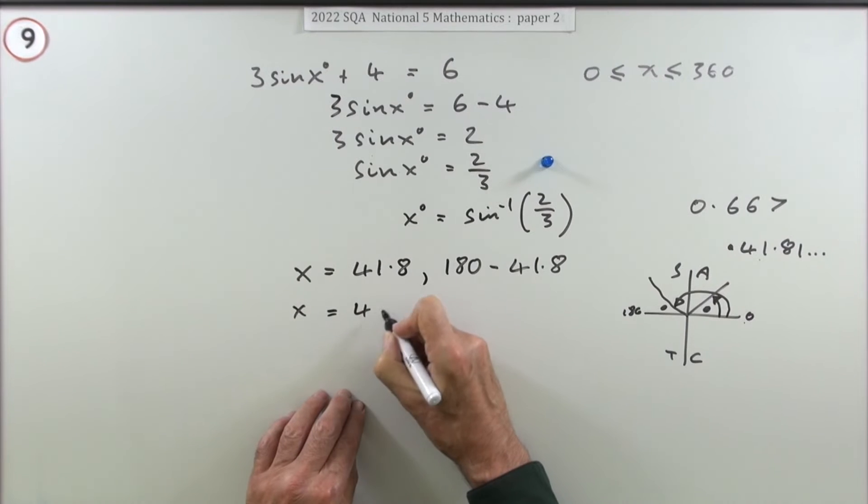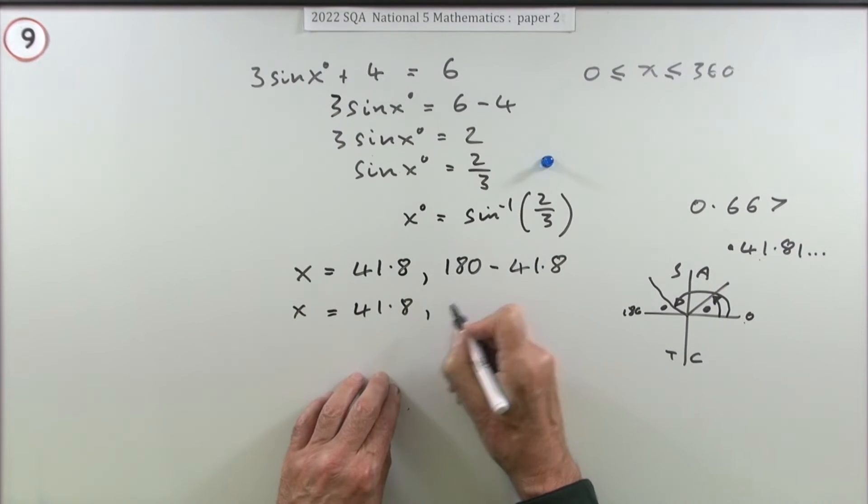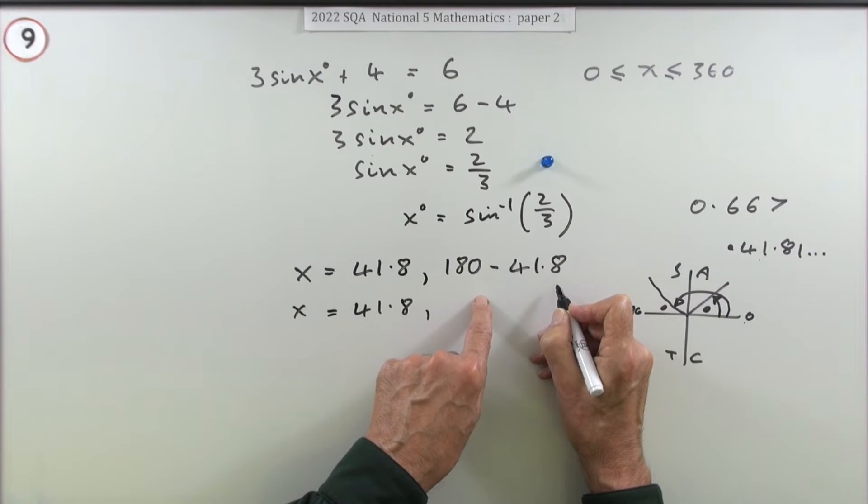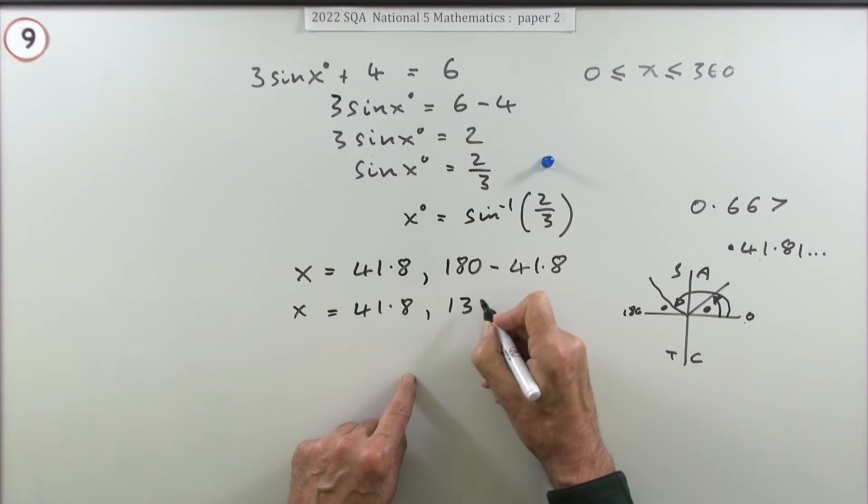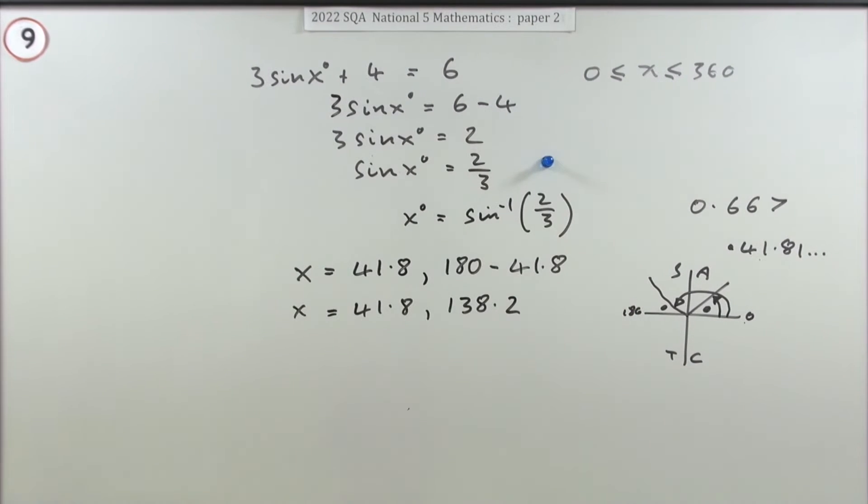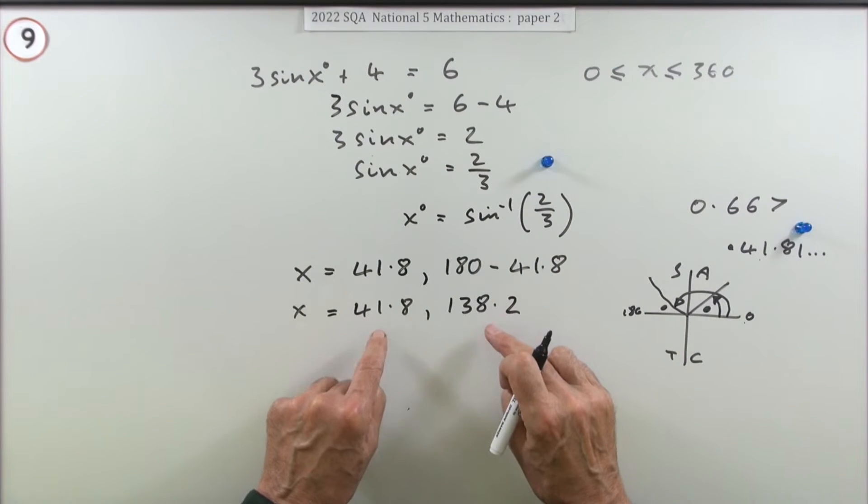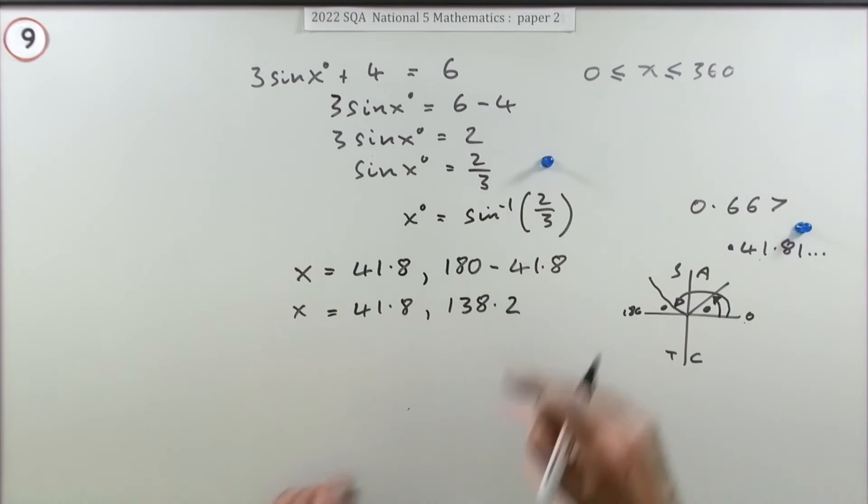So now I've got my two answers: 41.8 or 138.2. One mark was for getting that intermediate acute angle from the inverse sine, and the other mark is for finding the two appropriate angles within that range.